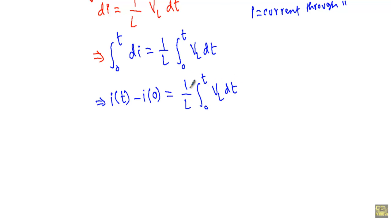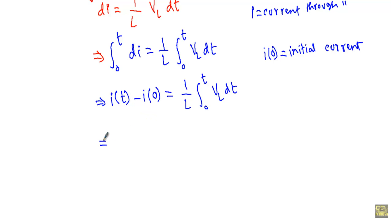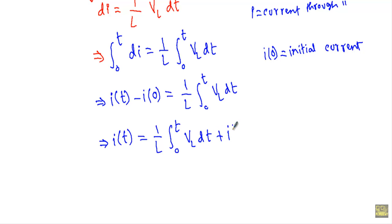Performing the integration gives: I(T) − I₀ = (1/L) · integral from zero to T of VL dt. Here I₀ is the initial current through the inductor and I(T) is the current at any time instant. So I can write: I(T) = (1/L) · integral from zero to T of VL dt + I₀. If I know the voltage across the inductor, I can easily calculate the current using this formula.